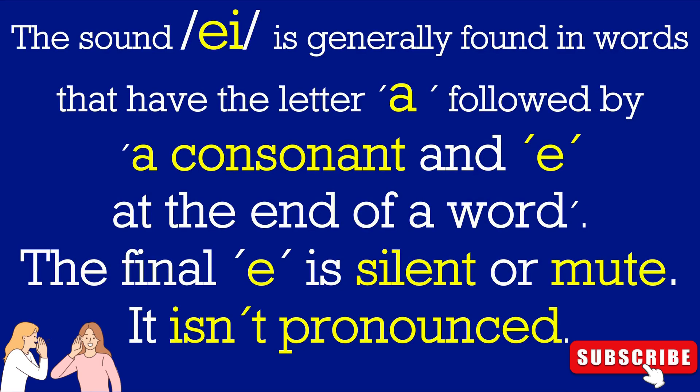The sound A is generally found in words that have the letter A followed by a consonant and E at the end of a word. The final E is silent or mute — it isn't pronounced.